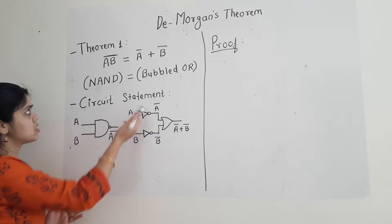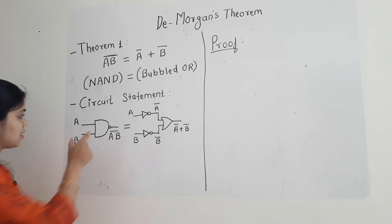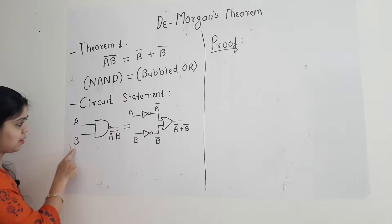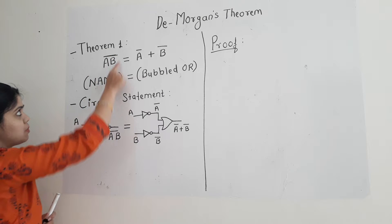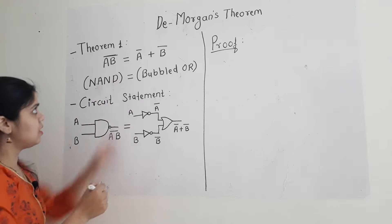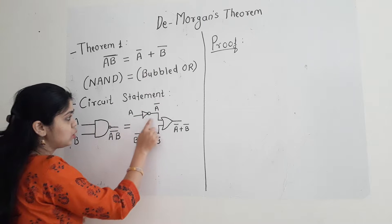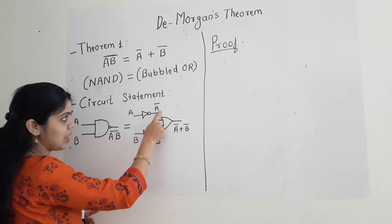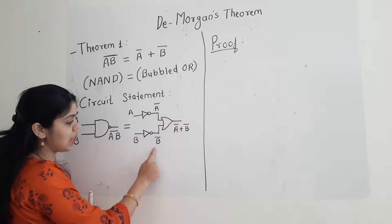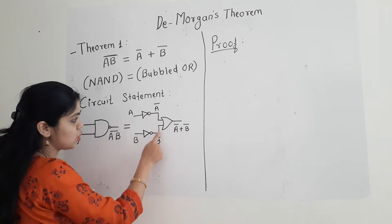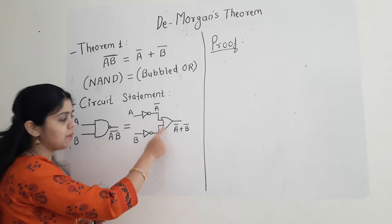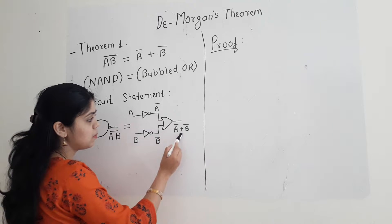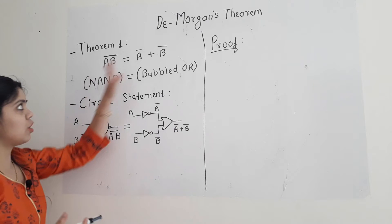If I want to make a circuit statement for this theorem, how will I draw it? First, I will draw a NAND gate. I have taken two inputs as A and B and a NAND gate, so at the output I will get my LHS, that is the left hand side. The right hand side is nothing but two inputs — I have taken two inputs and used a NOT gate to complement them. At the output I will get A bar and similarly B bar. Now both these complemented outputs have been given to an OR gate, meaning they have been added, so at the output I will get A bar plus B bar. This becomes the circuit statement for our first theorem.